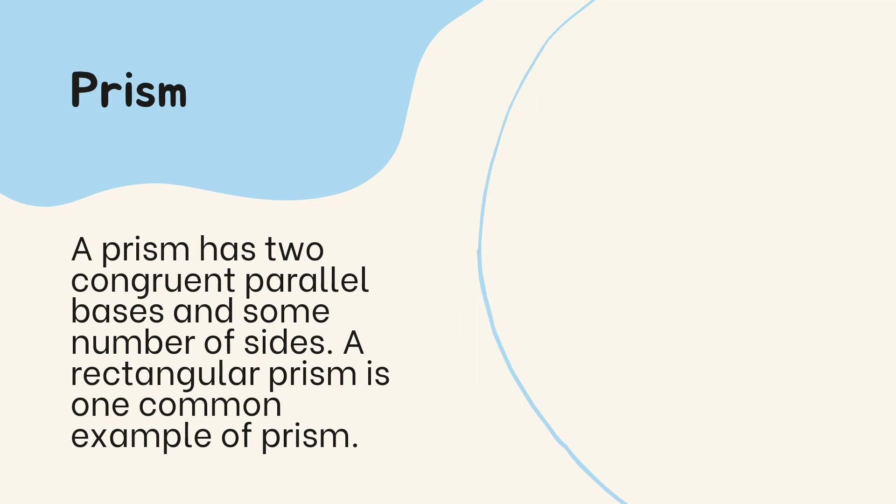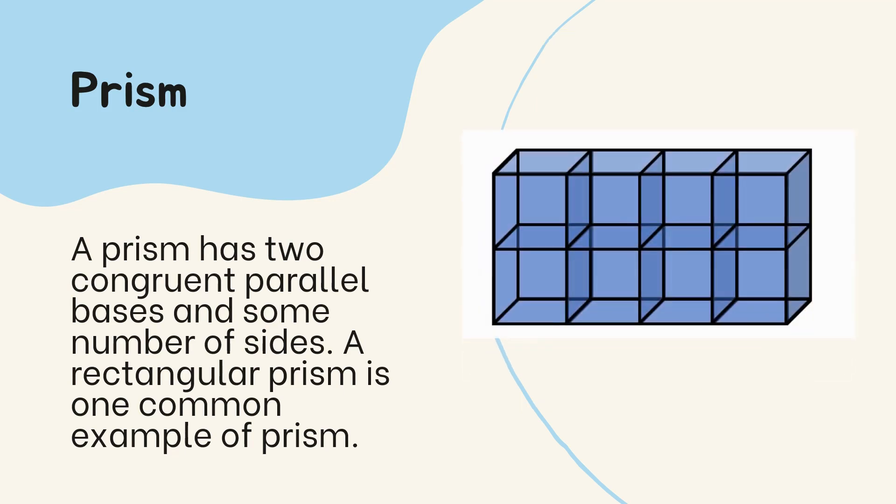In this figure, we also have here a rectangular prism which has cubic units shown. If we count it, 1, 2, 3, 4, then the under part is also 4. So we have here 8 cubic units.